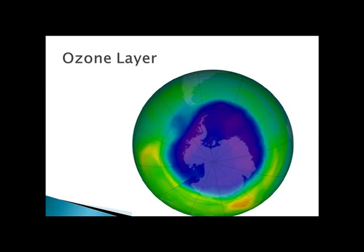Ozone, which is three oxygen atoms bonded together, blocks ultraviolet radiation. The ozone hole was first seen over Antarctica in 1985, and there's now a new one identified over the Arctic. Ozone is destroyed by CFCs — chlorofluorocarbons — found in coolant systems and propellants. CFCs stopped being produced in the United States in 1996, but we're still seeing the effects of ozone destruction.